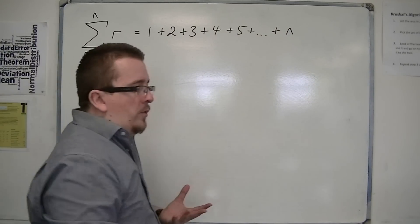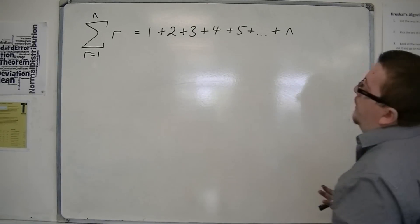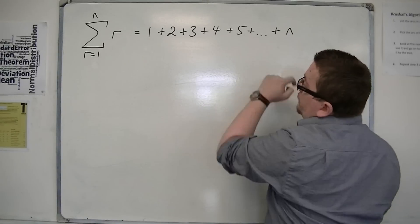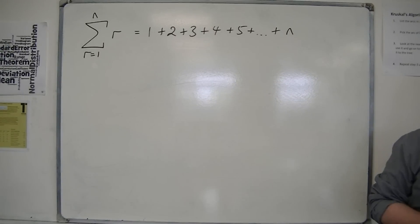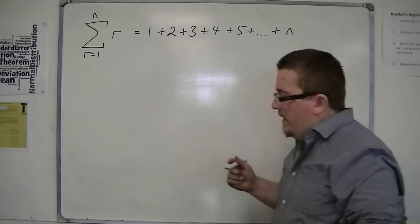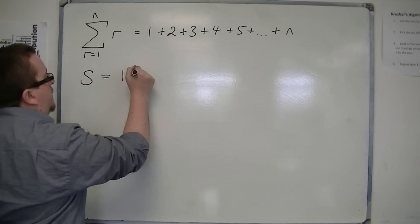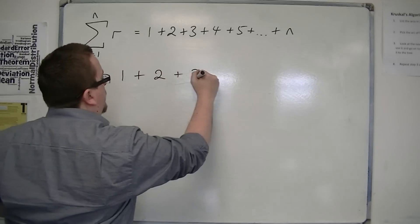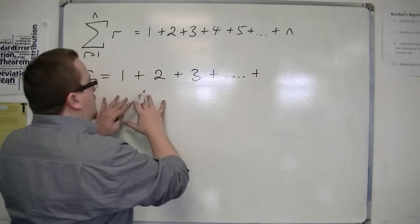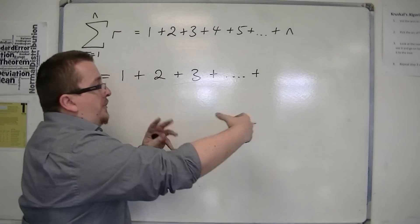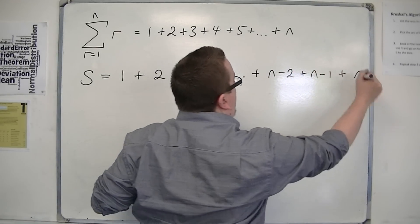What we want to do is write down an algebraic form for this. The method involves letting the sum be S. So S equals 1 plus 2 plus 3 plus dot dot dot plus n minus 2 plus n minus 1 plus n.